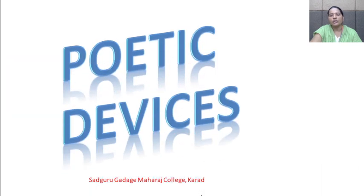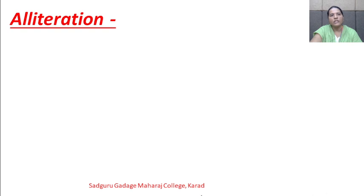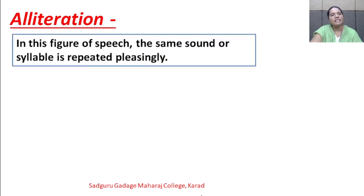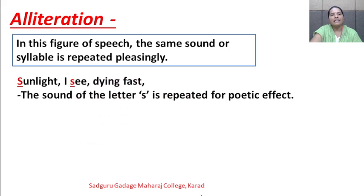Next, the poetic devices used in this poem. The first poetic device is alliteration. Alliteration means that the same sound or syllable is repeated pleasingly in this figure of speech. One example from the poem is 'Sunlight I see dying fast', where the sound of the letter S is repeated for poetic effect.